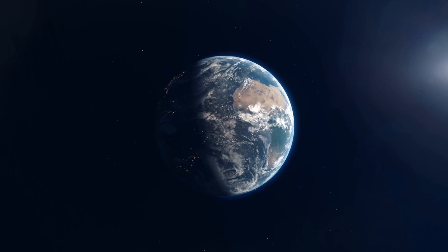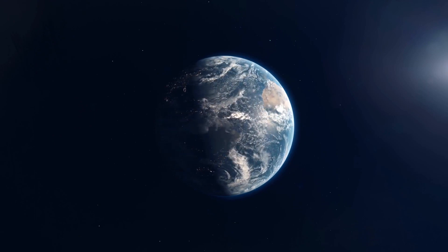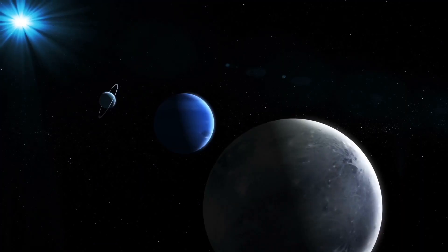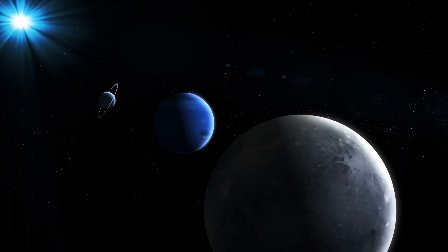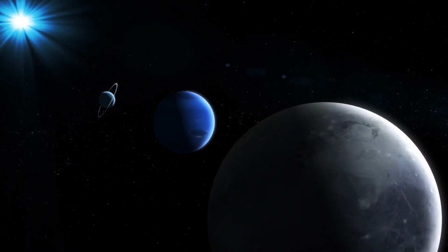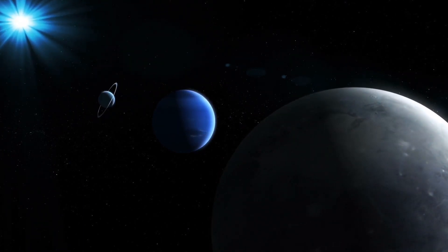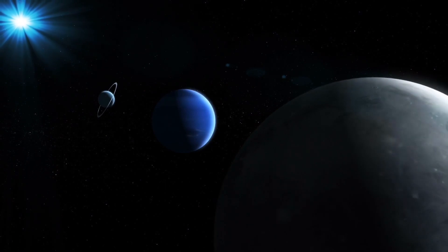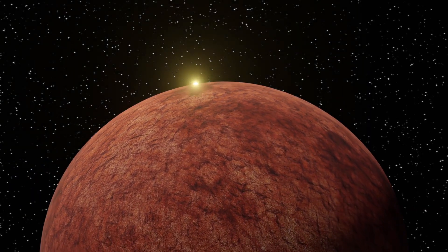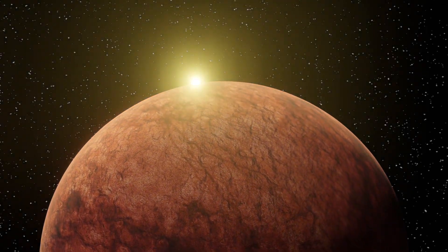Planetary rotation refers to the spinning motion of the planet around its axis. Just like the Earth rotates on its axis causing day and night, other planets in the solar system also rotate. The axis of rotation is an imaginary line that runs through the centre of a planet from its north pole to its south pole. The planet spins around this axis completing one full rotation in a certain amount of time. This rotation is called a day.